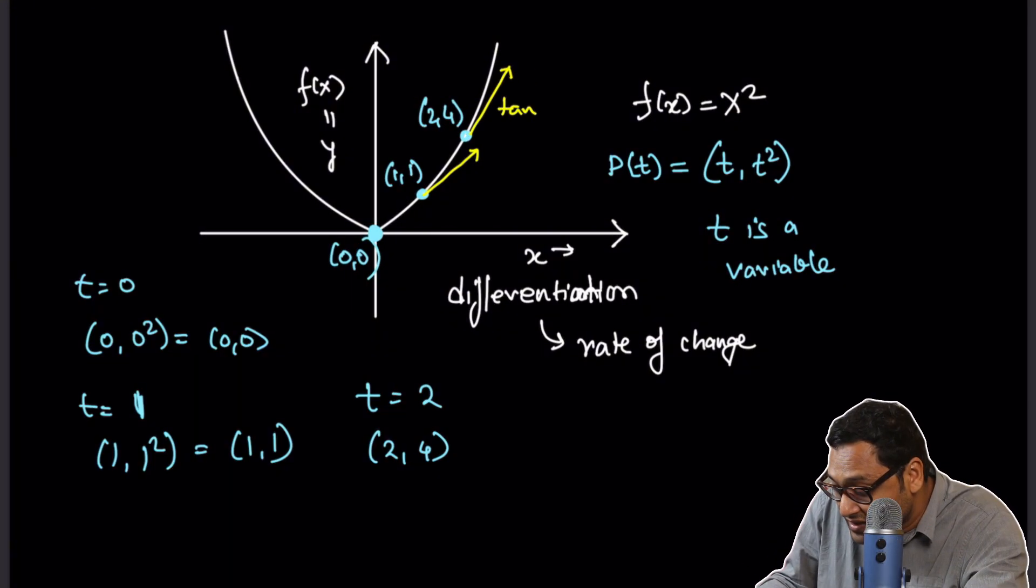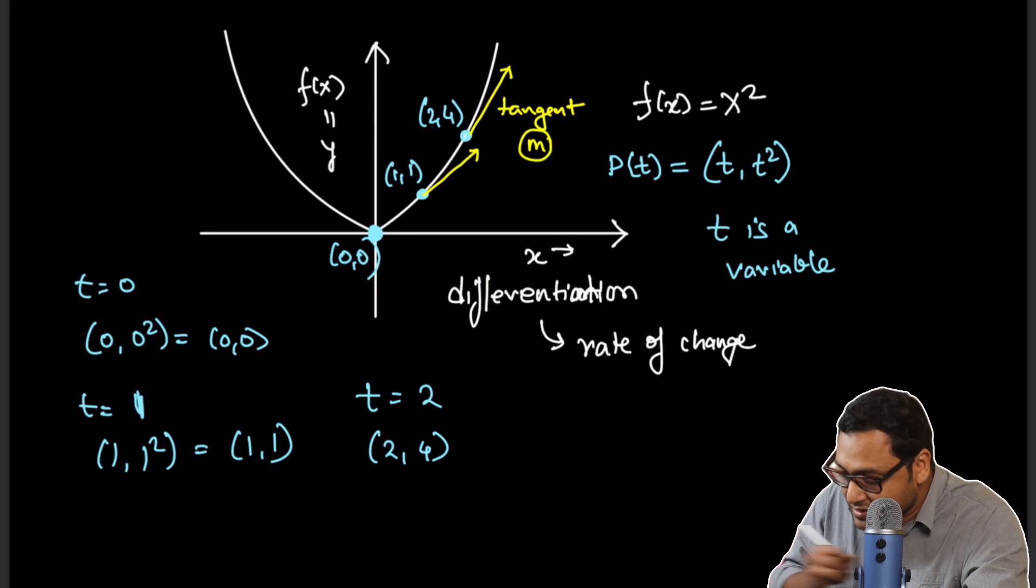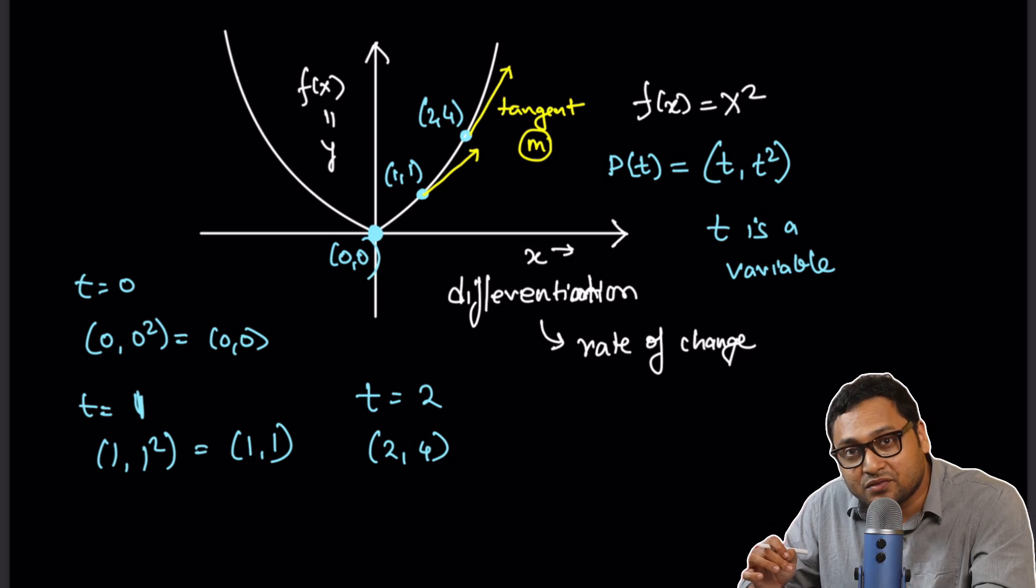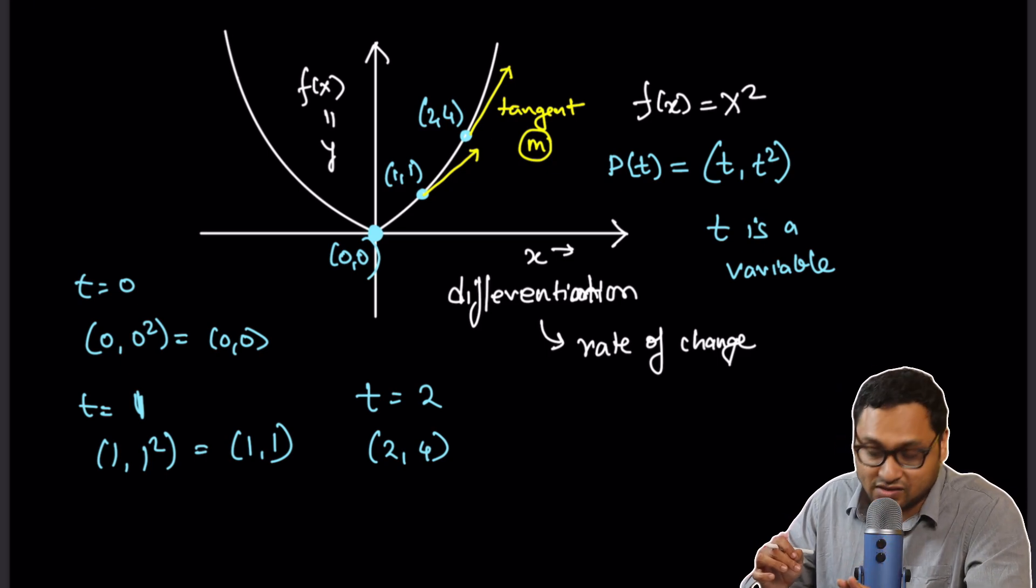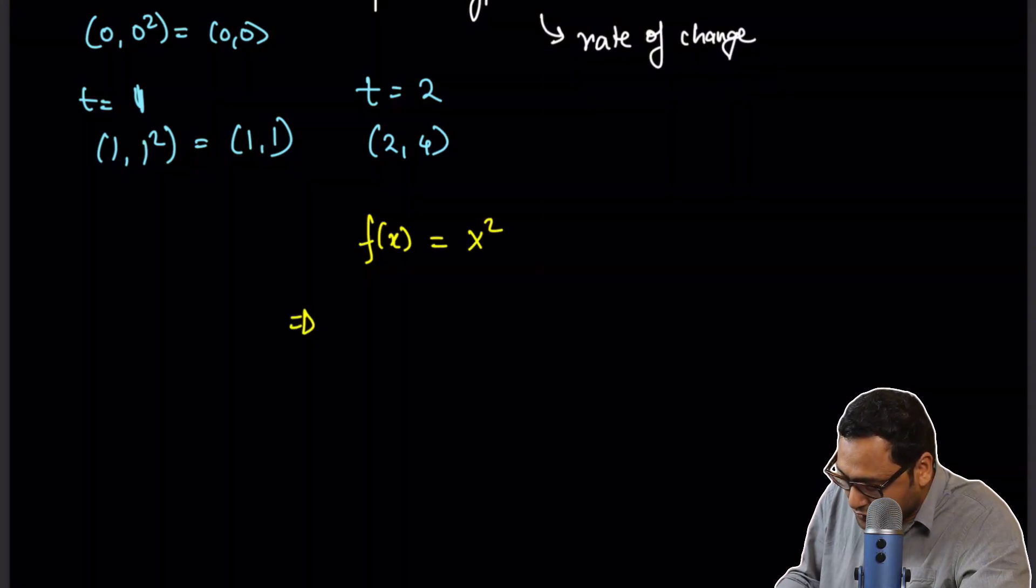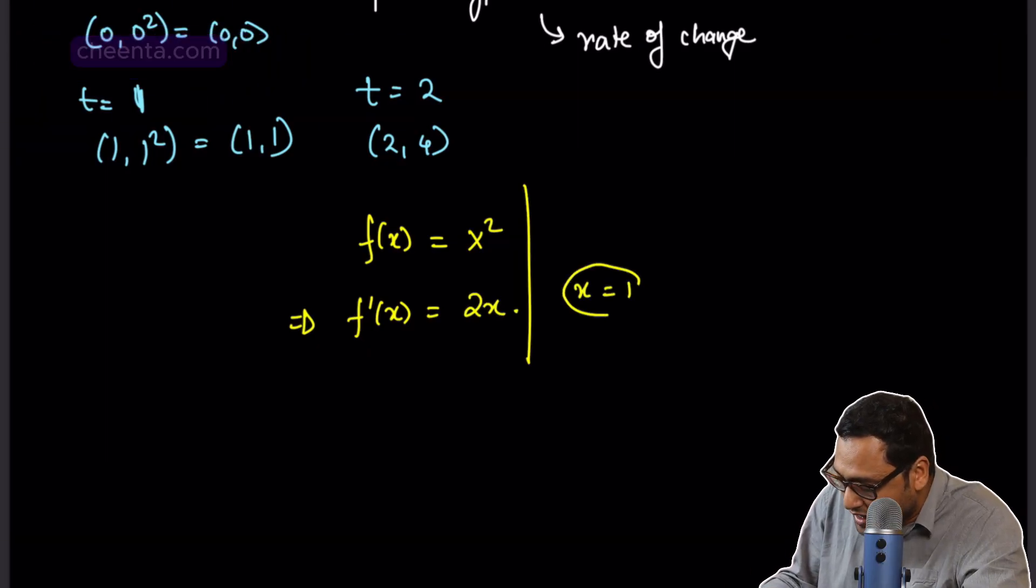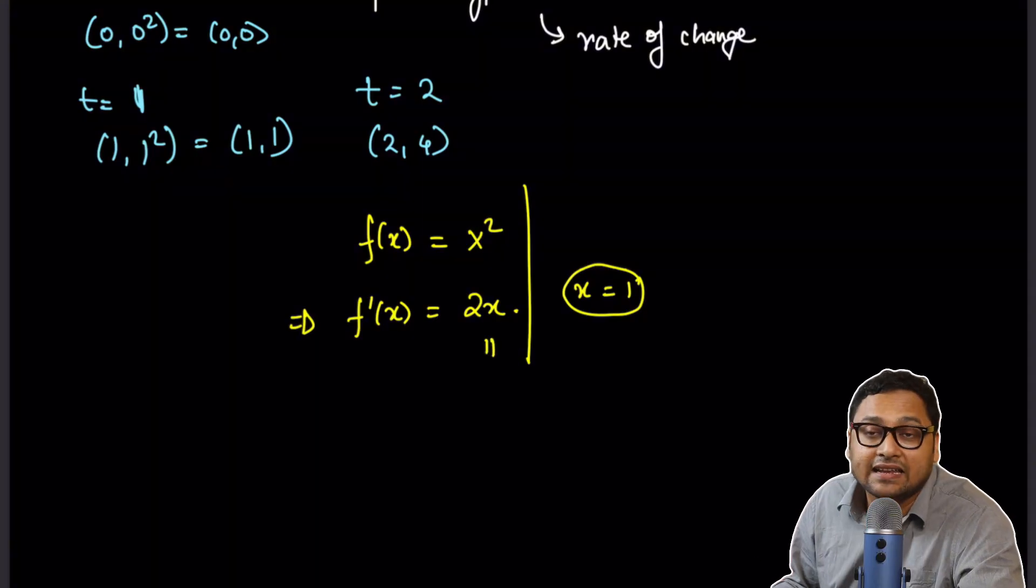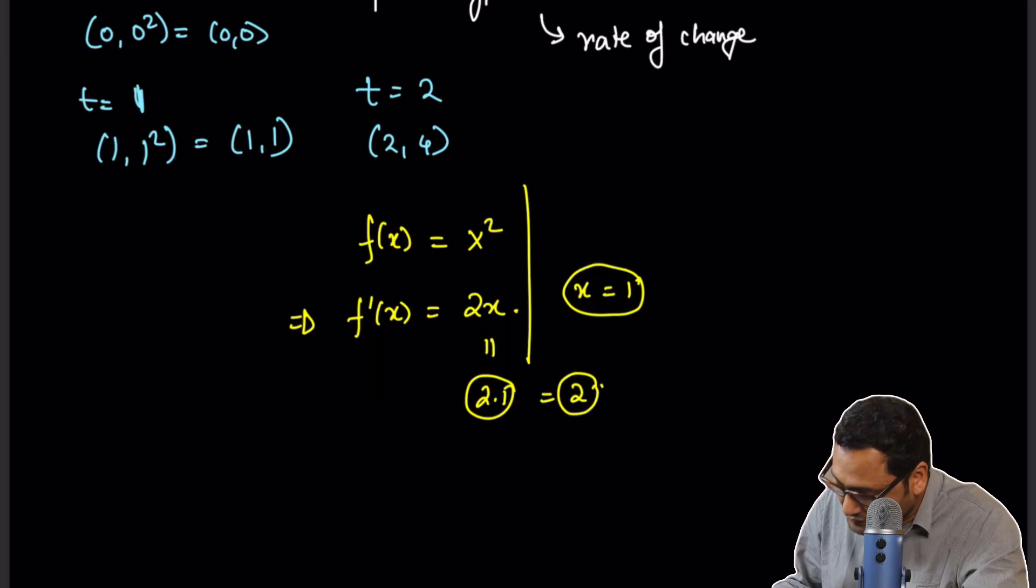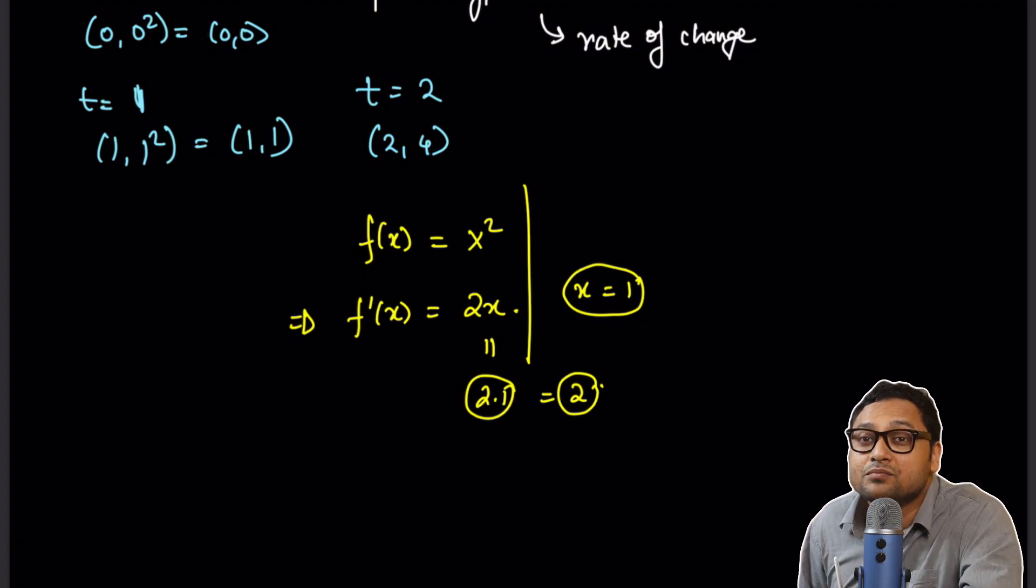So from elementary calculus, you know that the tangent line, if it has the slope m, that is the derivative of the function at that point. So, f(x) equals x squared, if I take the derivative of it, f'(x), this is 2x. So if you calculate it at x equals 1, the slope of the line is 2 times 1, which is 2. So it's a straight line whose slope is 2, but there is actually more to this story.